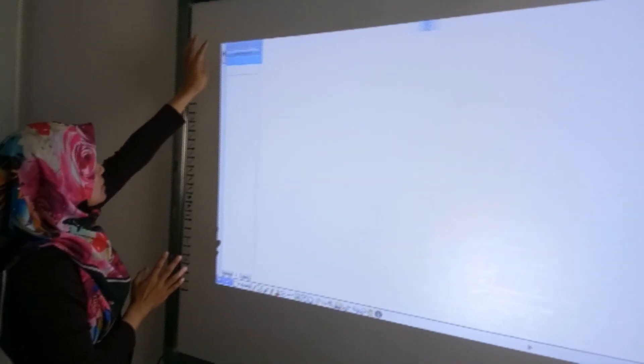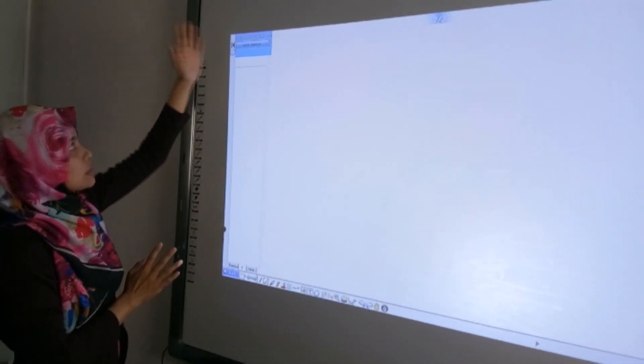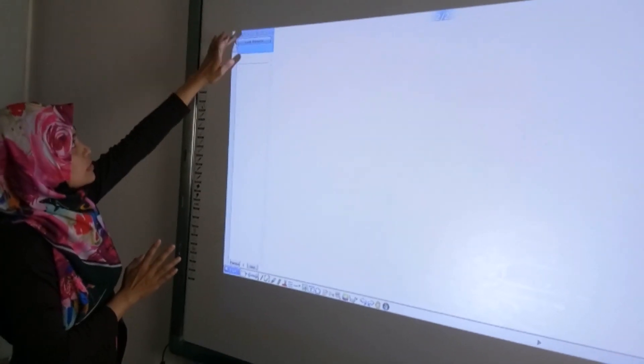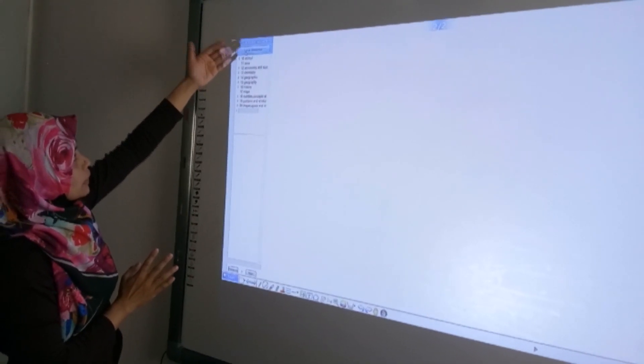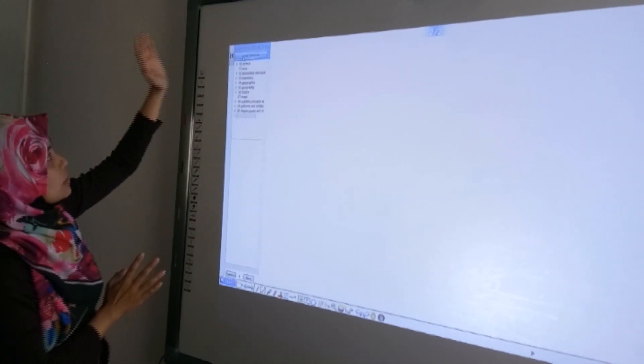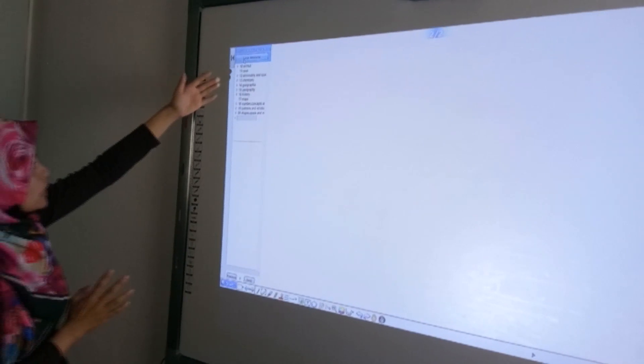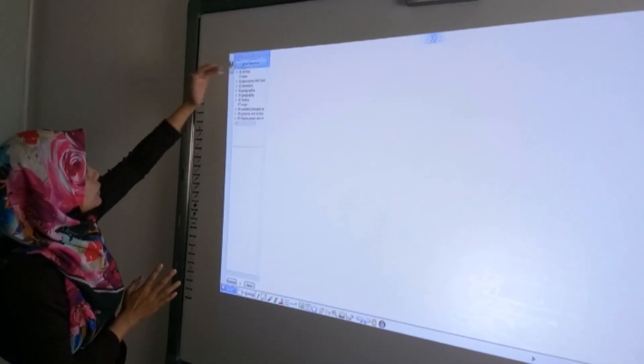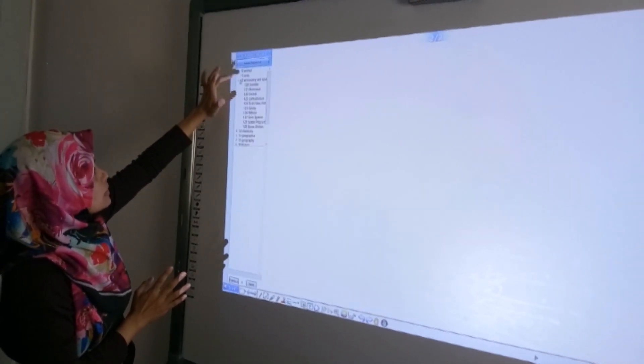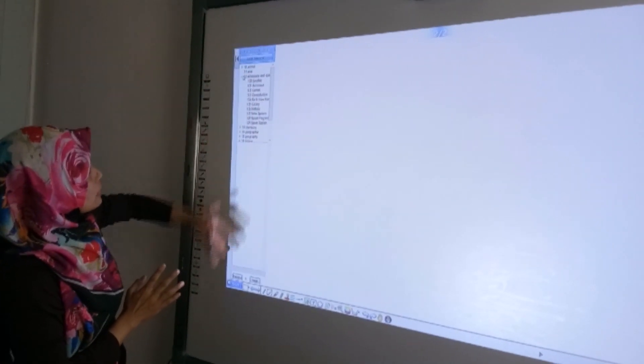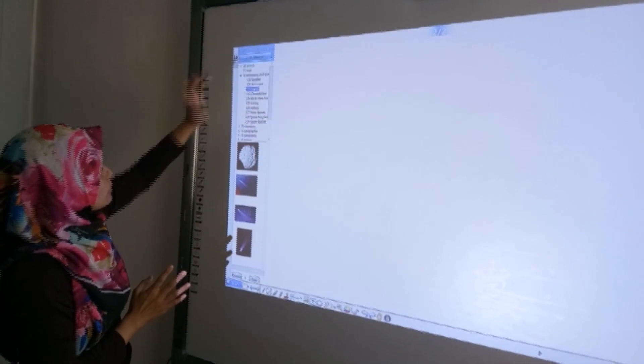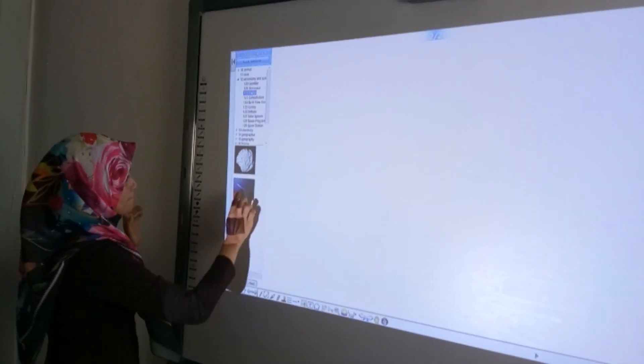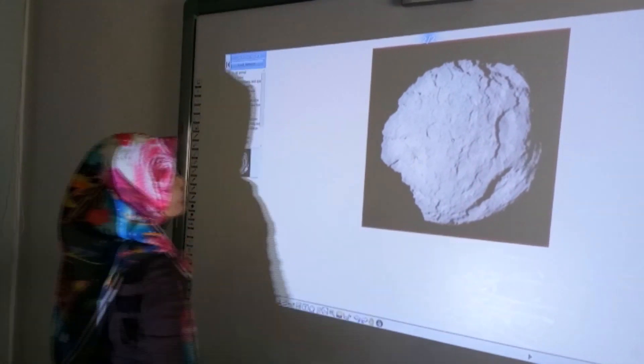Function lain, kita boleh masukkan gambar. Dekat sini, dah ada local resource. Dekat dalam local resource ni, dia dah sediakan banyak gambar-gambar mengikut kategori. Contohnya, animal, astronomi, geografi, history maps. Saya tunjuk contoh macam mana nak masukkan. Just click dekat sini. Dia ada senarai dia. Satellite, astronome. Masukkan contoh gambar komed. Just drag gambar, masuk dekat screen.